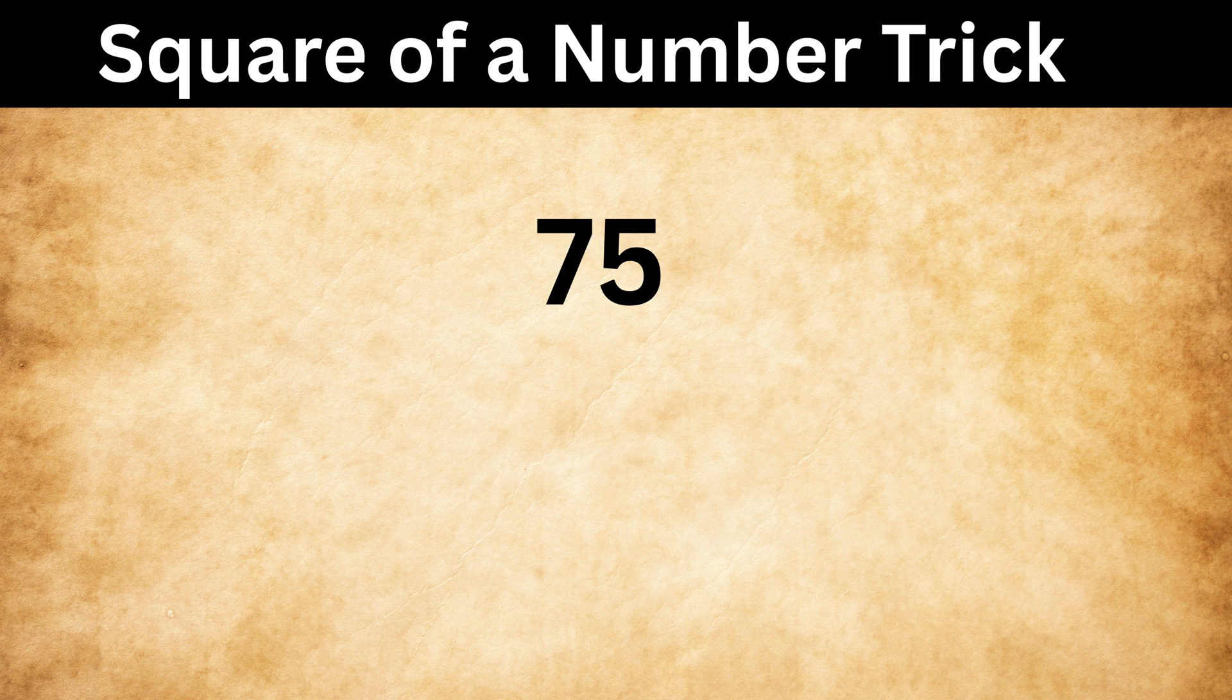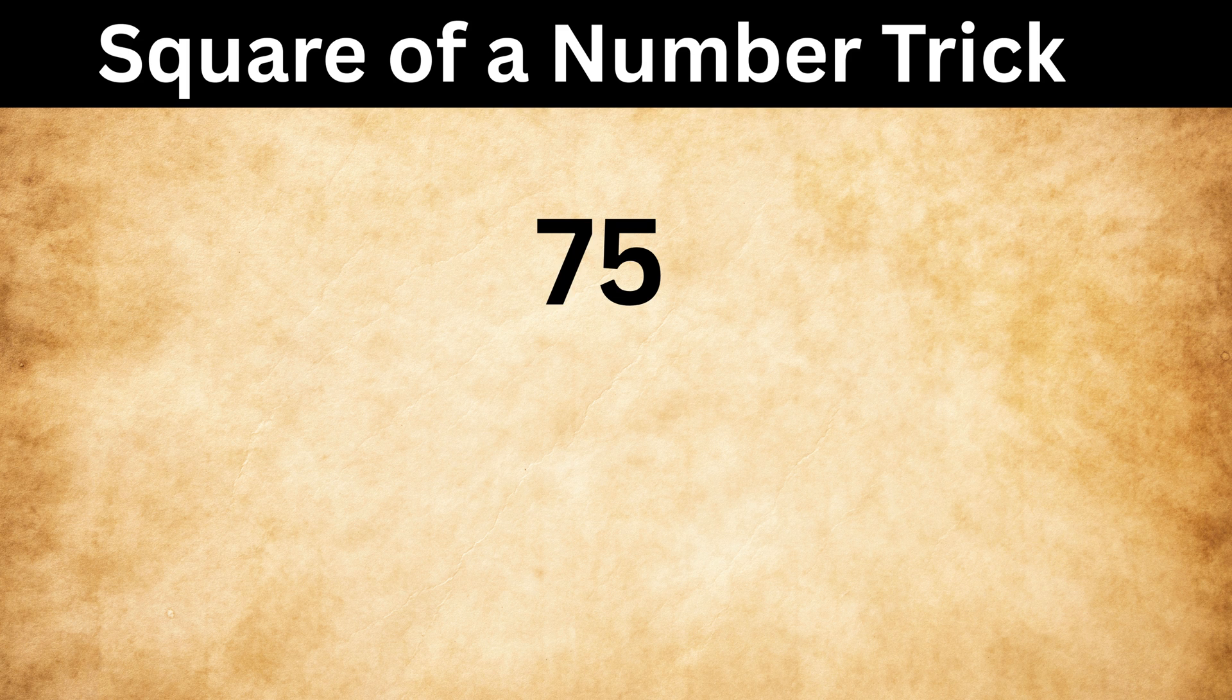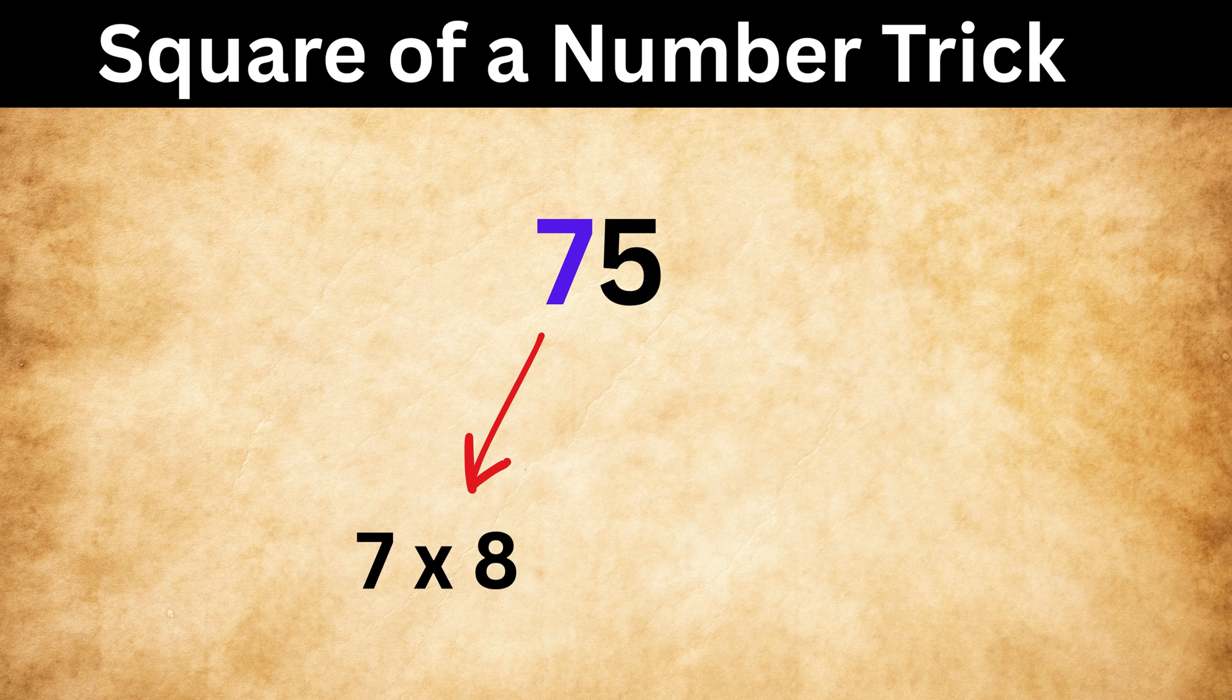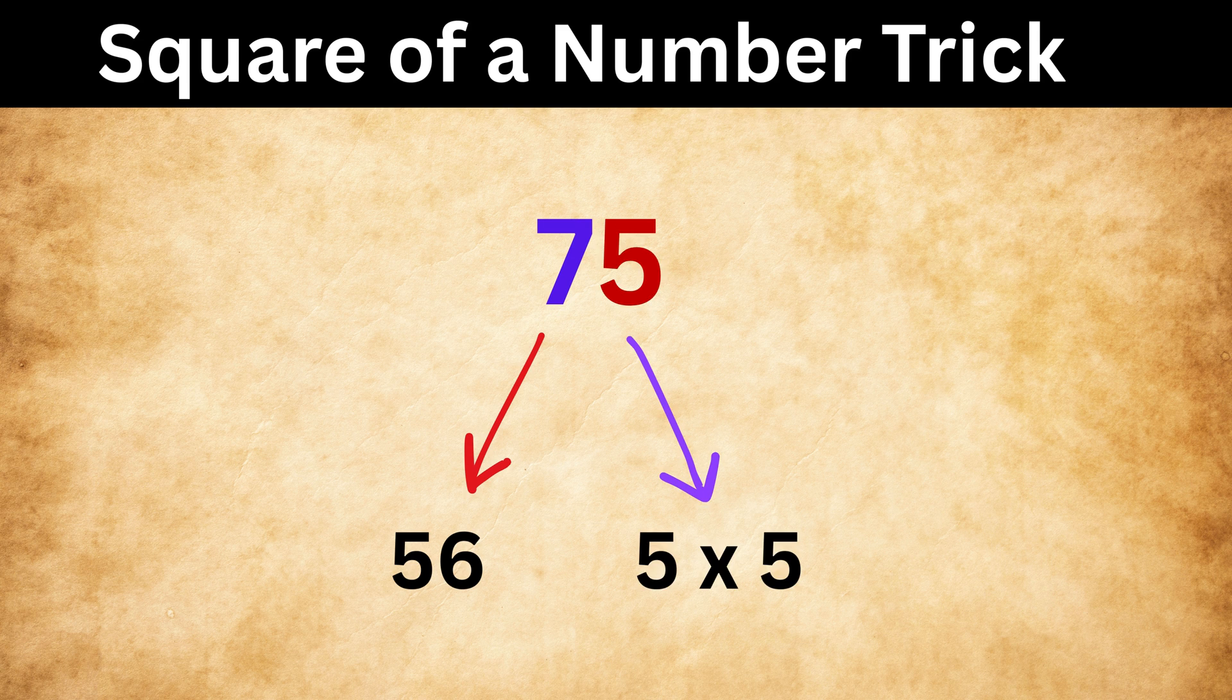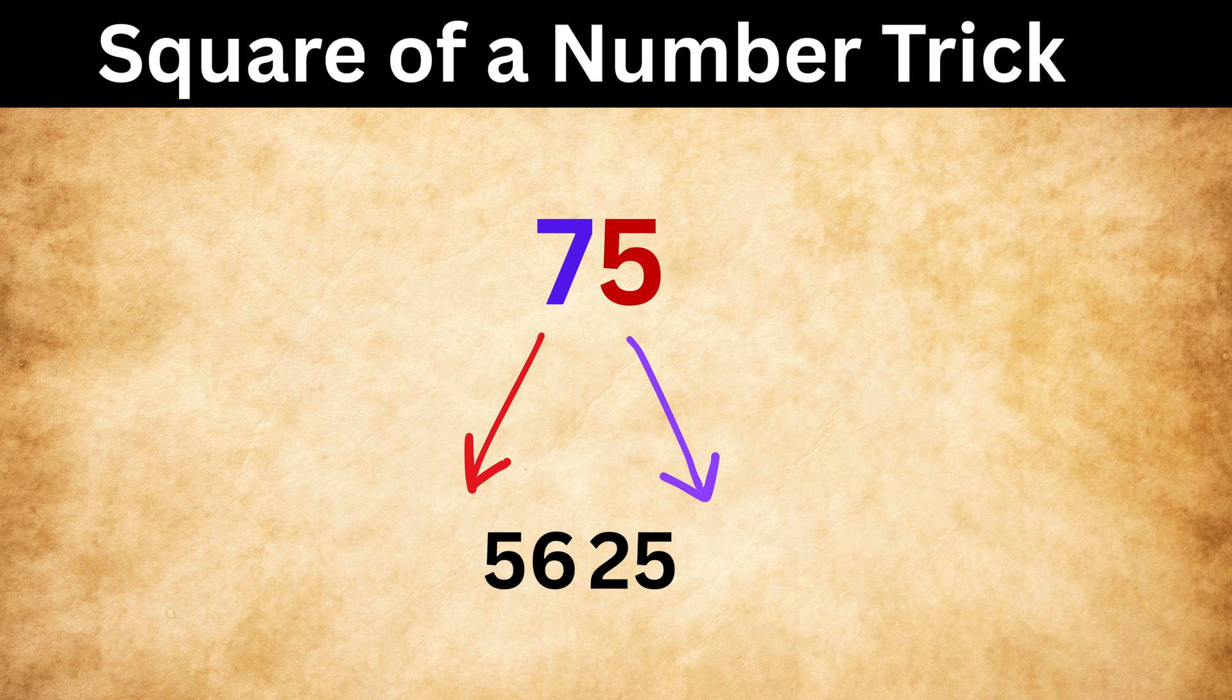Let us try it with 75 square. This is super easy. Take this number 7 and multiply it with the number that comes after it, or 8. So we get 7 times 8, or 56. Now 5 square is 25, right? So our final answer is 5625. And that's it. Super duper easy.